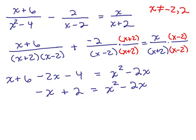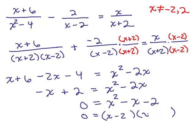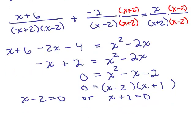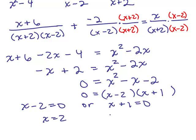We have another quadratic, so we need to set it equal to 0. Let's keep 0 on the left side since x squared is positive on the right. We get x squared; adding x to both sides gives minus x on the right; subtracting 2 from both sides gives x squared minus x minus 2 equals 0. Factoring: x minus 2 times x plus 1 equals 0. Setting each factor equal to 0: x equals 2 or x equals negative 1.